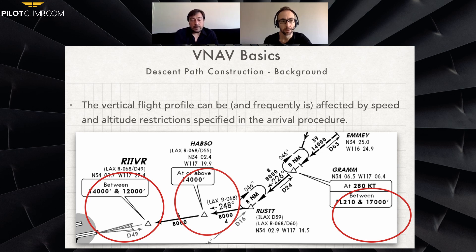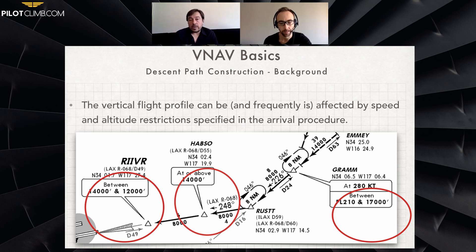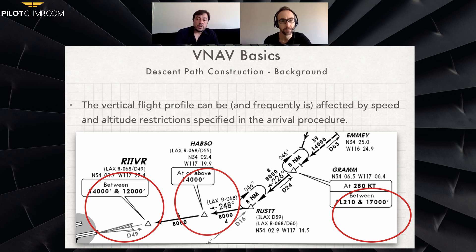When you reach some altitude and have to keep descending, the VNAV is going to give you a path of 1,000 feet per minute descent to continue with these altitude restrictions.